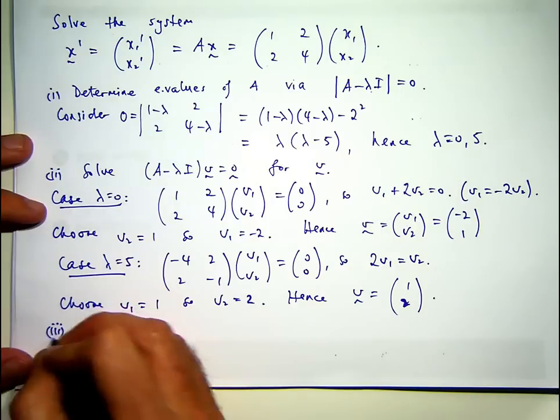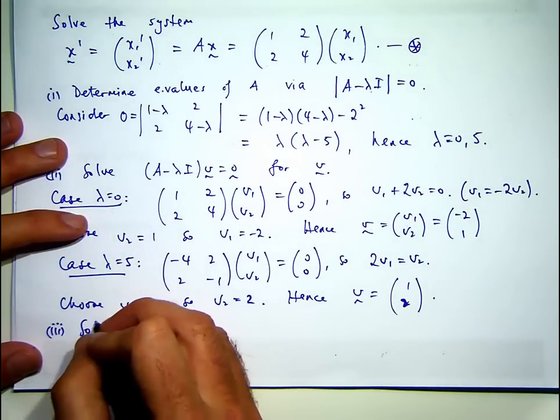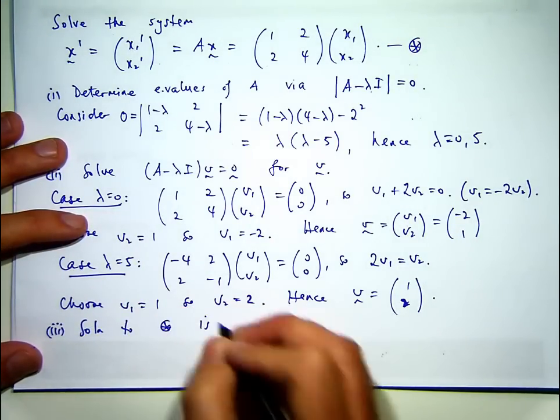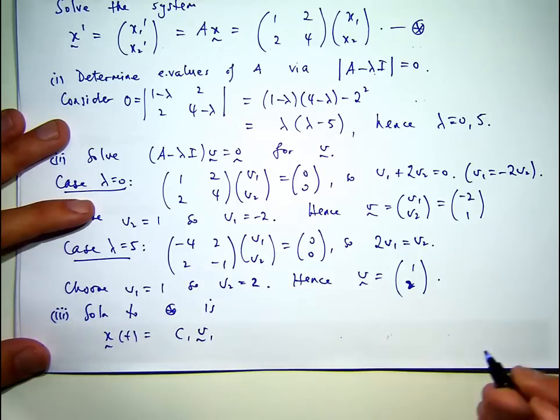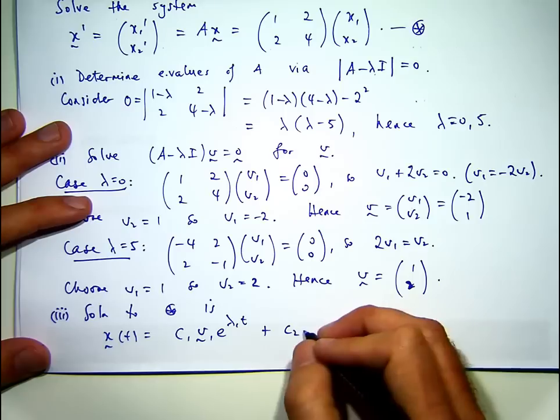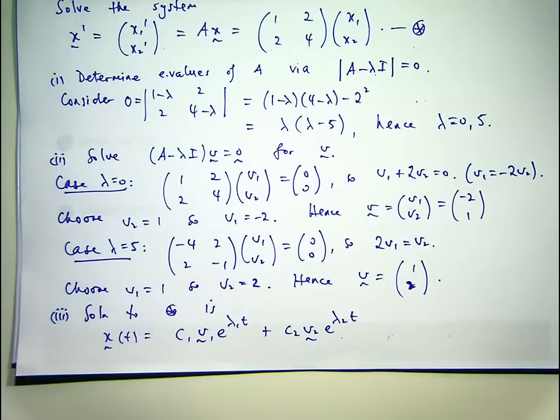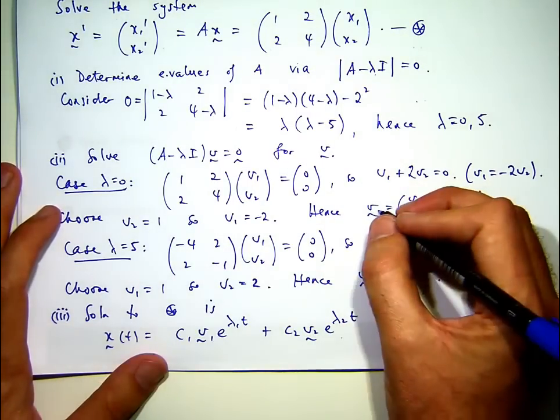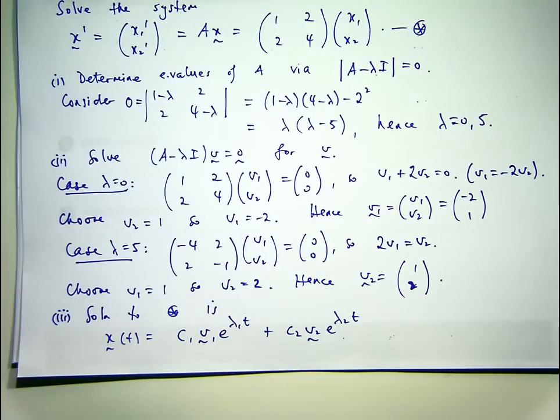So this is part three. Let's call this star. I'm just going to write this as the vector V1 and this is the vector V2, just so I can use this expression here. C1 and C2 are any constants.